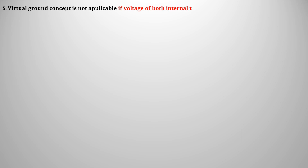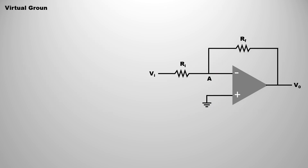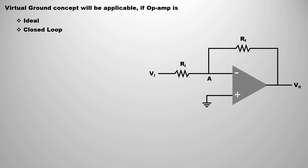The fifth limitation is that even if the operational amplifier is a closed-loop ideal op-amp with negative feedback, the virtual ground concept will not be applicable if the voltages of both internal terminals are given. To apply the virtual ground concept, it is necessary that the voltage of only one of the two internal terminals is given. If the voltages of both terminals are given, we cannot forcibly equate them using the virtual ground concept. In summary, to use the virtual ground concept, the operational amplifier must be ideal, in closed loop, with negative feedback, and only one internal terminal voltage must be given.